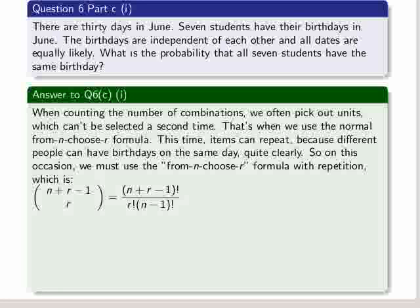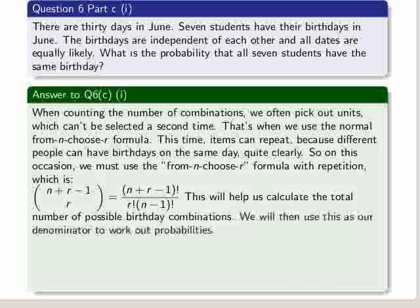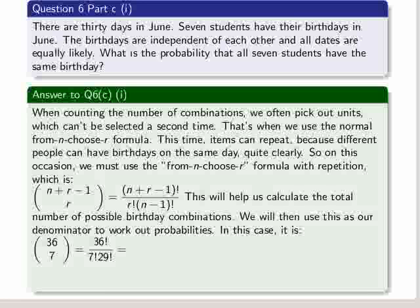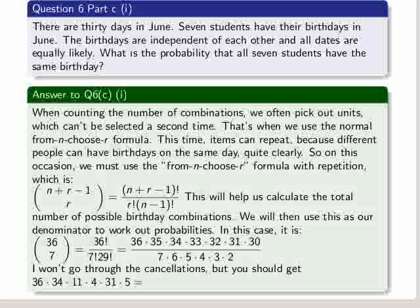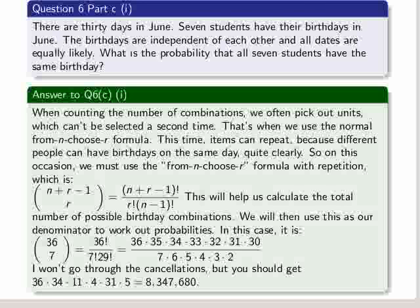And that is n plus r minus 1 choose r. That works out in the same factorial manner. And this will help us calculate the number of possible birthday combinations. We will use this as our denominator later to work out probabilities then, because it's the total number regardless of type. Okay, so we get n equal to 30, we get r equal to 7, and that equals 36 choose 7. We expand that out. 29 factorial cancels. We get a sequence, a product sequence there. Now you can go through the calculations or the cancellations. There are a few that come out. Eventually you should get 8,347,680 to be the total possible number of combinations of birthdays in June from 7 people.